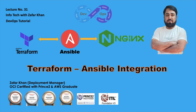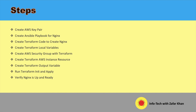In this video, I'm going to show you how you can use Terraform with Ansible. I'm going to create an EC2 instance in AWS and install Nginx on that EC2 instance through Ansible. So first we will create an AWS key pair and then create an Ansible playbook for Nginx and then create Terraform code to create Nginx.